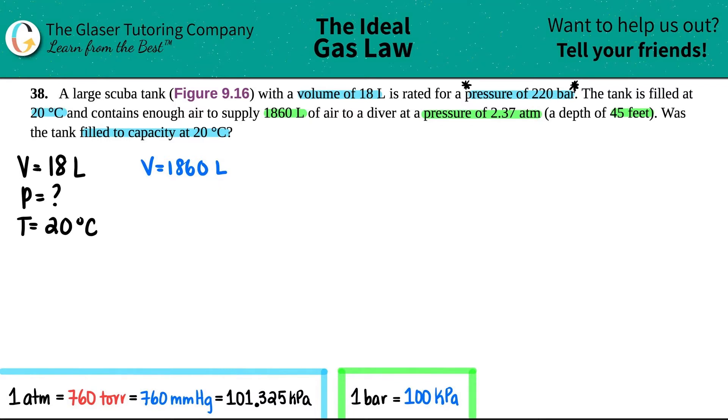And you see how now it says it's going to supply the 1860 liters of air to a diver at a pressure? You see the difference in notation where they say 'at a pressure' versus the other one where it says 'is rated for'? Since this is at a specific pressure, I'm now going to use that pressure value, and that's 2.37 atm. They tell us that this is a depth of 45 feet, so this is like a distance value or a height value—doesn't really matter. And then the question was saying, 'was the tank filled to capacity at 20 degrees Celsius?' So technically the temperature didn't change.